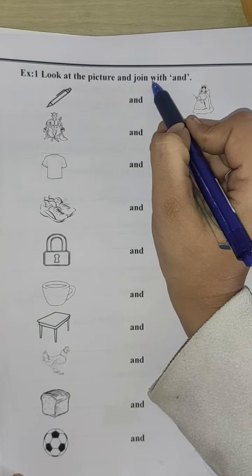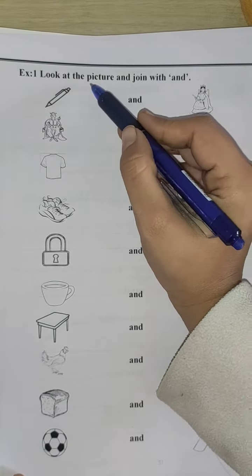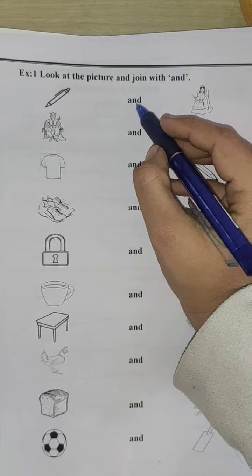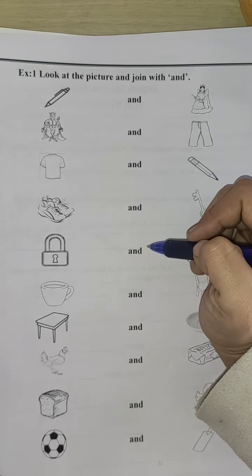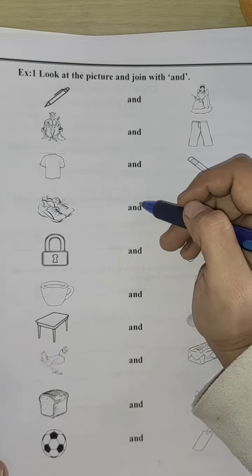Look at the picture and join with and. Pictures are given and in between and is written. You have to make the pair of the pictures.